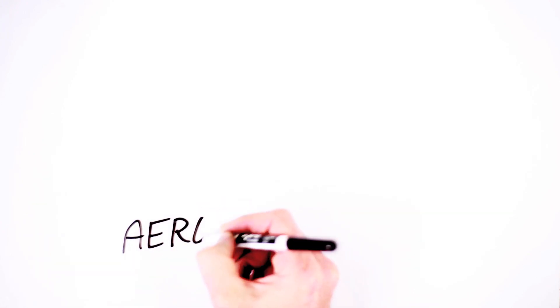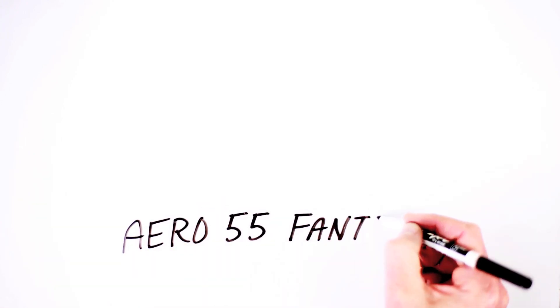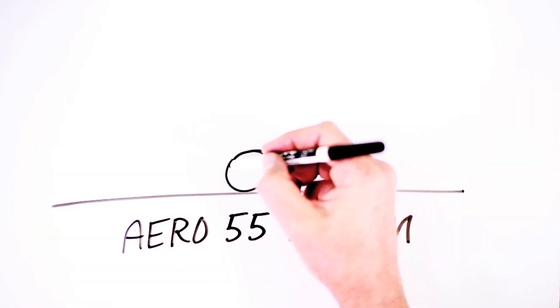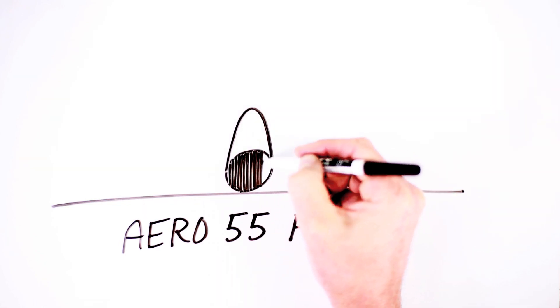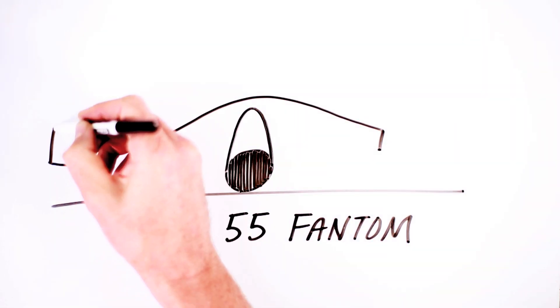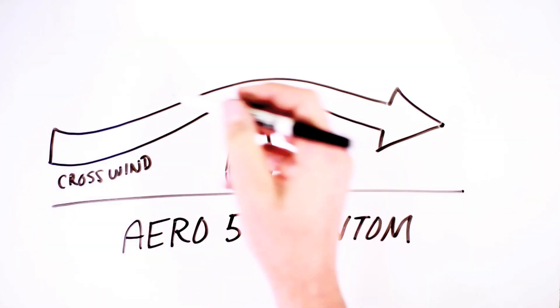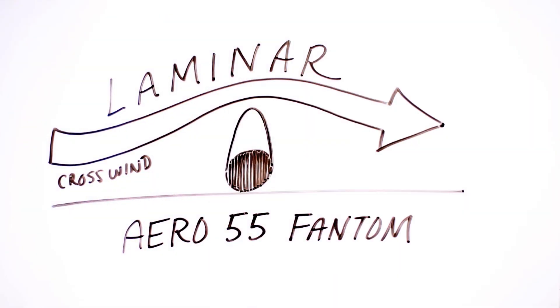To improve the aerodynamic efficiency of the Aero 55 wheelset, we reduced the size of the low pressure void behind the rim by streamlining the airflow. Instead of a turbulent pocket of low pressure, we have more laminar airflow with minimal air separation. We call this unorthodox new rim shape phantom.